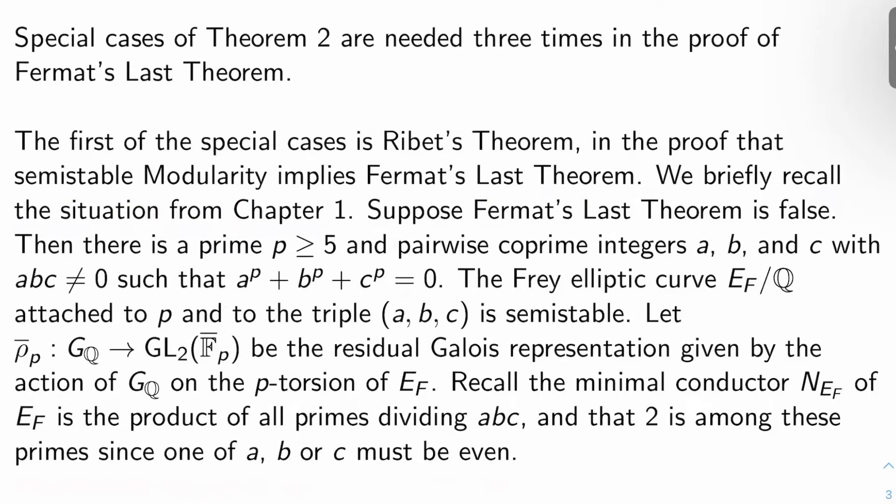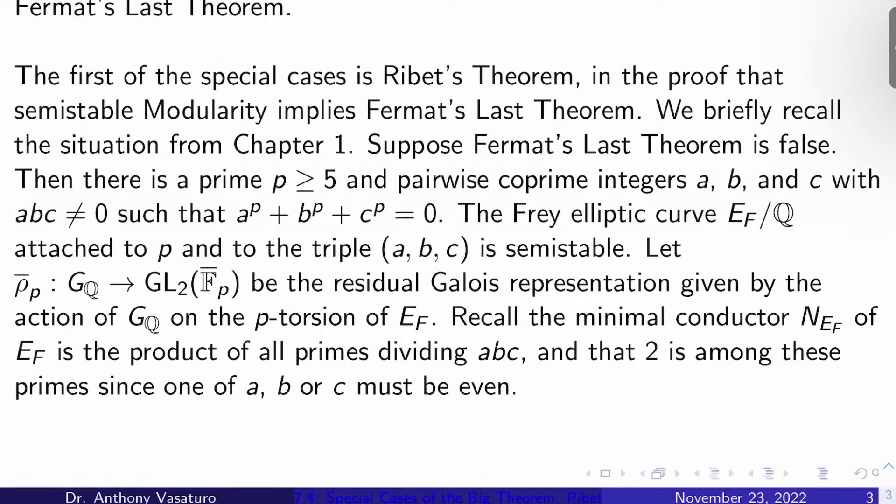Let's briefly recall the situation from way back in chapter one of my notes. Suppose Fermat's last theorem is false. Then there is a prime p at least five and pairwise coprime integers a, b, and c with abc non-zero such that a^p + b^p + c^p = 0. So we have a non-trivial integer solution to the Fermat equation with exponent p.